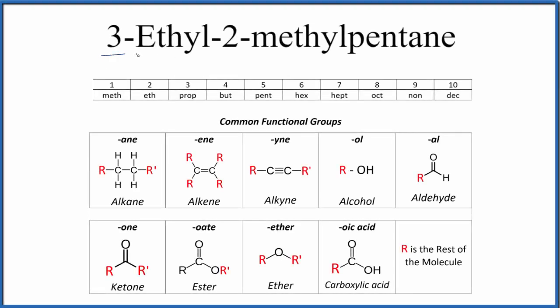Let's write the structure for 3-ethyl-2-methylpentane. When we look at the pentane, we have this A-N-E. That means we have what's called an alkane, so it'll all be carbon single bonded together. We know that we'll have single bonds between our carbons.